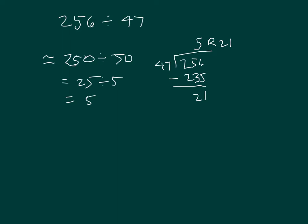Let's run our check, which would be 47 times 5. 5 times 7 is 35, regroup of 3. 5 times 4 is 20, plus 3 is 23. And we add in the remainder of 21 to get 256, which was our dividend. So 256 divided by 47 equals 5 with the remainder of 21.